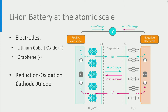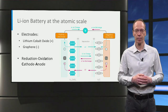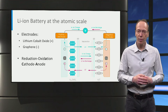Lithium is relatively weakly bonded in the graphite compared to the LCO. The resulting chemical driving force for lithium to move from the graphite towards the LCO expresses itself as battery voltage. This driving force will cause the battery to discharge spontaneously,